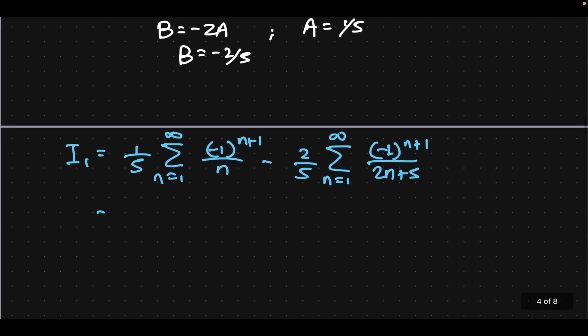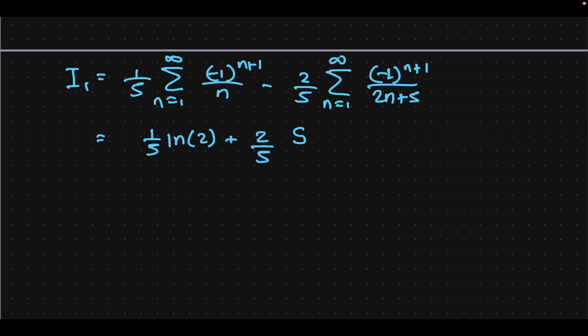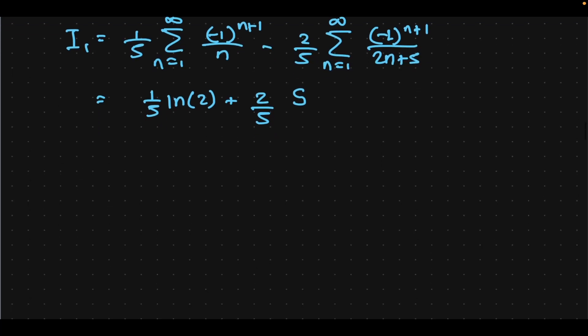Now the first term in I1 is actually 1 fifth times natural log of 2. This is just the alternating harmonic series for which we know the answer. I'm going to write this as 2 over 5 times capital S, where I take in the negative sign and the infinite sum and call that S, because S might be a little more tedious than the first term.